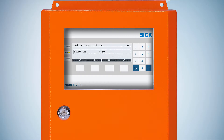If you choose time, your Circle 200 will perform a calibration at specified time intervals automatically. With time and digital input, you still need to configure an interval. To start the calibration, the defined time interval needs to have elapsed and the operator has to start the calibration by digital input. In this case, we select time.